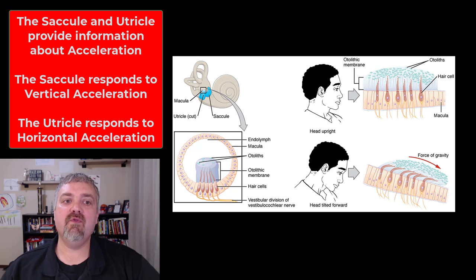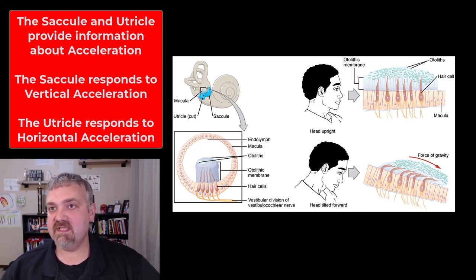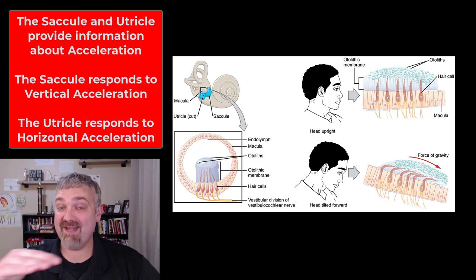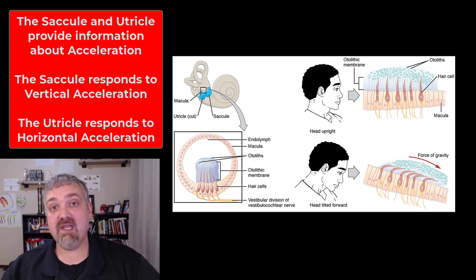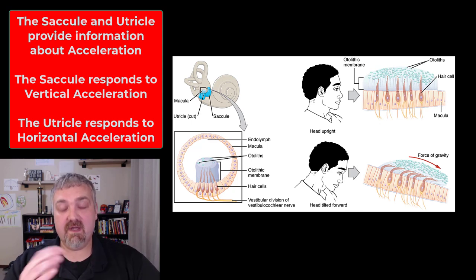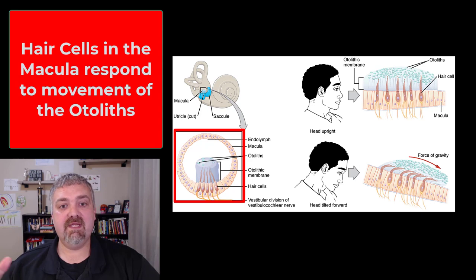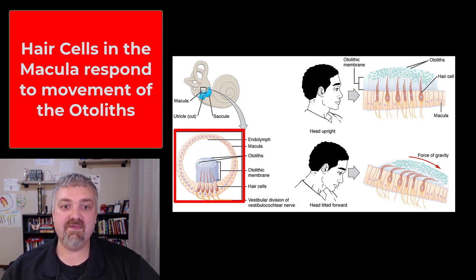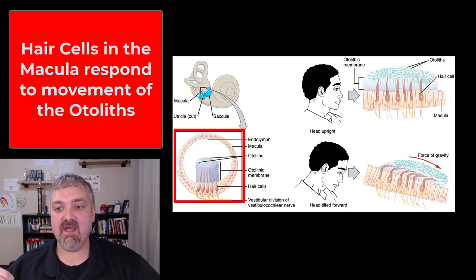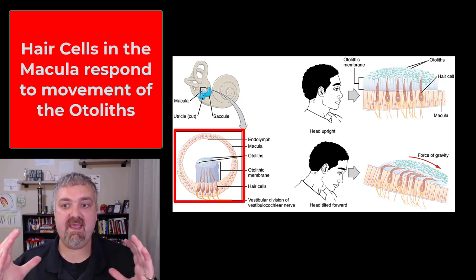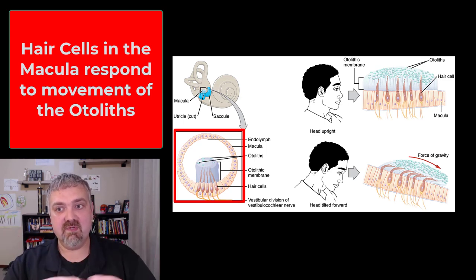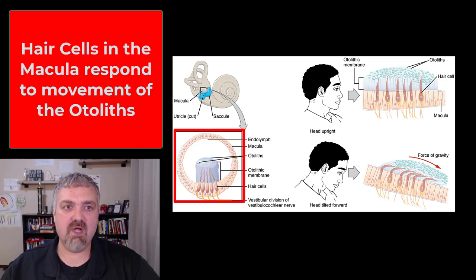The saccule and the utricle both respond to linear acceleration. The key difference is the utricle is more sensitive to horizontal acceleration, whereas the saccule is more sensitive to vertical acceleration. In the saccule and the utricle, we have hair cells, and resting on top of them is something called otoliths — little stones made of packed minerals called statoconia — and that makes them very top-heavy. So when there's movement in the head, it causes the otoliths to move, and that triggers these hair receptors.